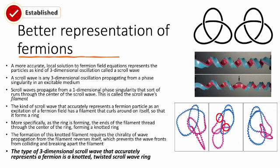Let's recap what we've gone over in this section to develop our conceptual understanding of fermions. Fermions are an excitation of fermion fields — they are waves in these fields. The kinds of dynamic excitations that are fermions seem to behave as dynamic reflections of themselves, and we can understand this characteristic by looking at spinors. They also propagate from a structure found inside the oscillation — the filament — whose structure is a knotted, twisted ring, which we can understand by looking at scroll waves.